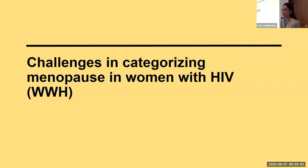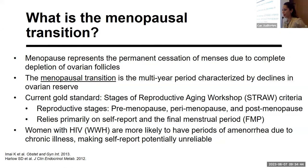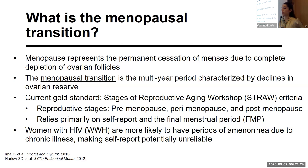First, I'll touch briefly on the challenges in categorizing menopause in women with HIV, and then use that as a jumping-off point to discuss a paper we just published in CID. Menopause represents the permanent cessation of menses due to complete depletion of ovarian follicles, and the menopausal transition is the multi-year period characterized by declines in ovarian reserve. The current gold standard for categorizing menopause is the Stages of Reproductive Aging Workshop, or STRAW criteria, which divides women into premenopause, perimenopause, and postmenopause, relying primarily on self-report of menstrual status and the final menstrual period (FMP).